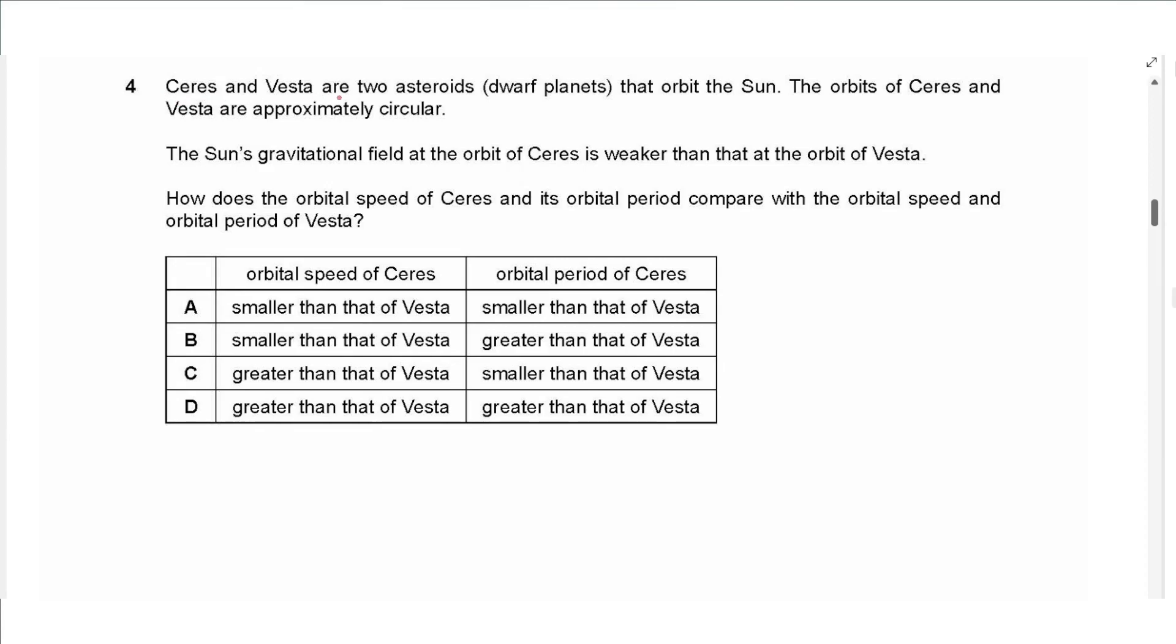Question 4 says, Ceres and Vesta are two asteroids or dwarf planets that orbit the sun. The orbits are approximately circular. The sun's gravitational field at the orbit of Ceres is weaker than that at the orbit of Vesta. So Ceres is actually further away from the sun since the gravitational field strength of the sun at Ceres is weaker, and Vesta is closer.